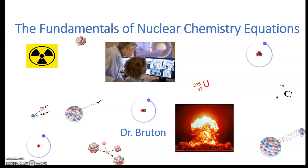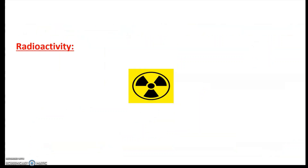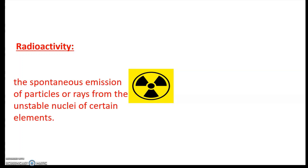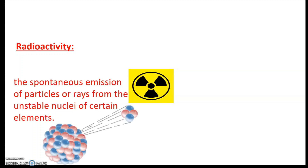Starting out with the very first part: radioactivity. What is radioactivity? It's defined in a number of ways, but it usually revolves around the spontaneous emission of particles or rays from the unstable nuclei of certain elements — so you've got little pieces of the atom that are basically just flying out of the nucleus.